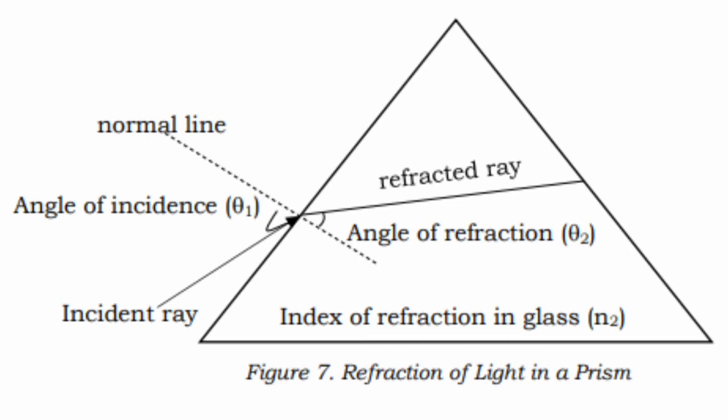In figure 7, light travels from air to the prism. When the light enters the glass, which is denser than air, it slows down and is bent. You observe that the angle of incidence, theta 1, is greater than the angle of refraction theta 2. You can see that the light ray refracts or bends towards the normal.